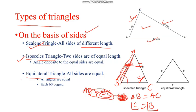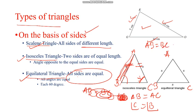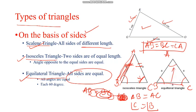Then we have the equilateral triangle — all sides are equal. So, if all sides are equal, then all angles are equal. A side to opposite angle, A side to opposite angle, A side to opposite angle — all are equal.